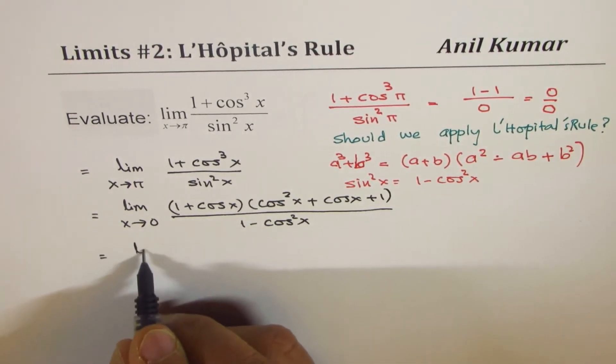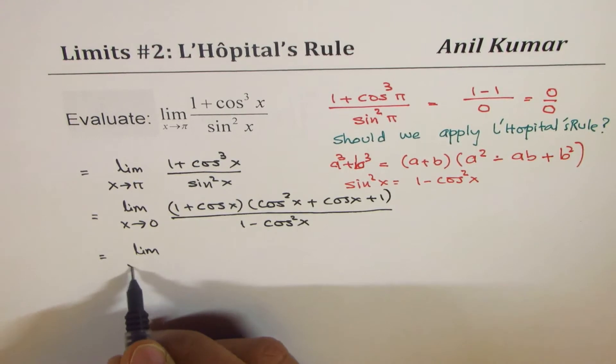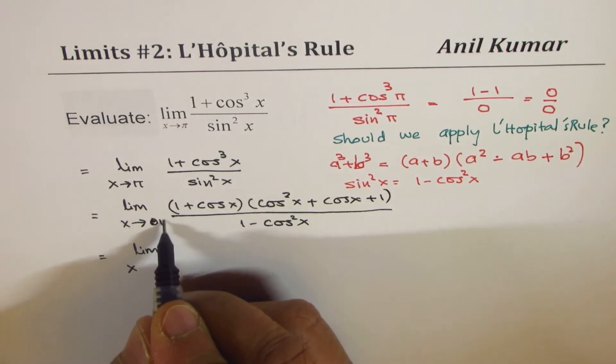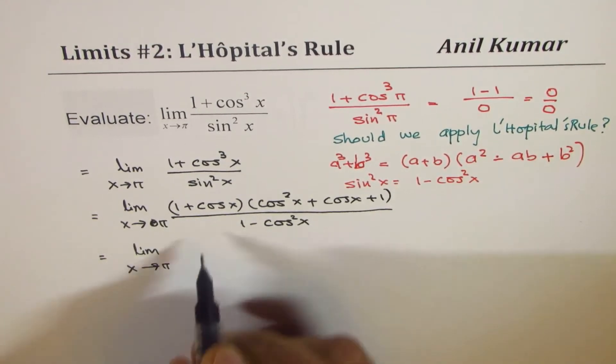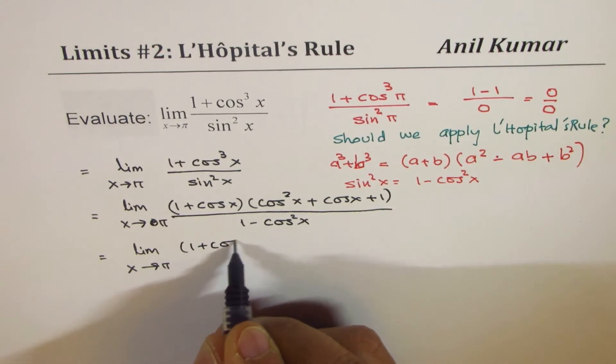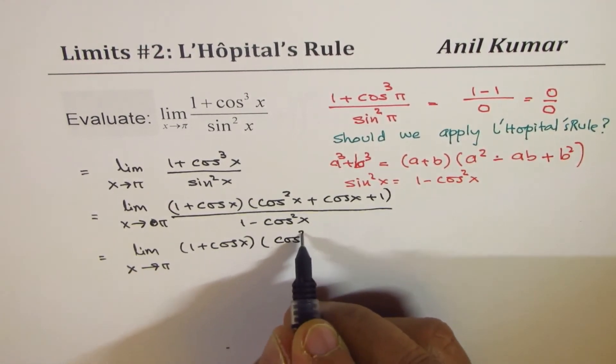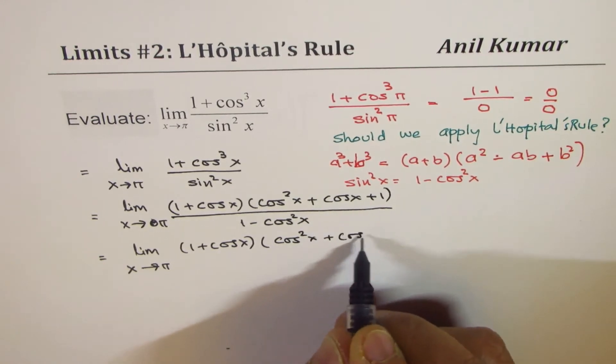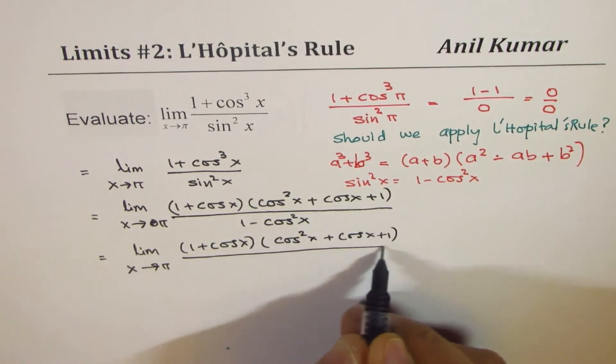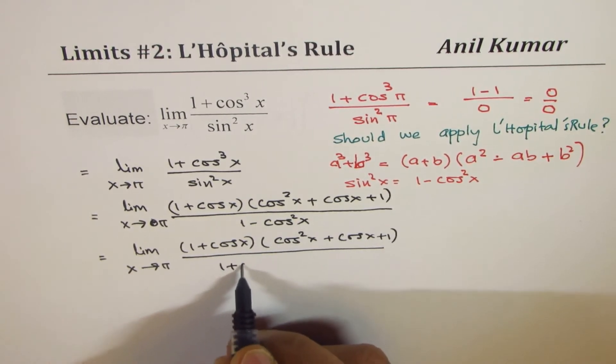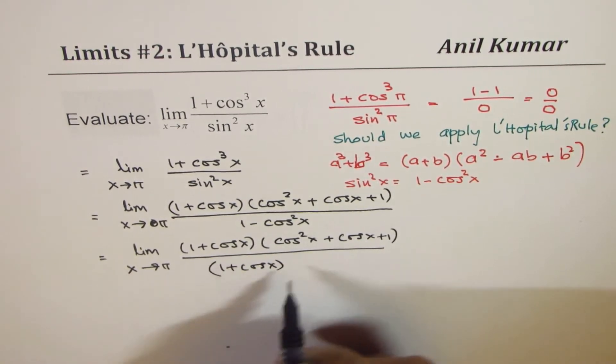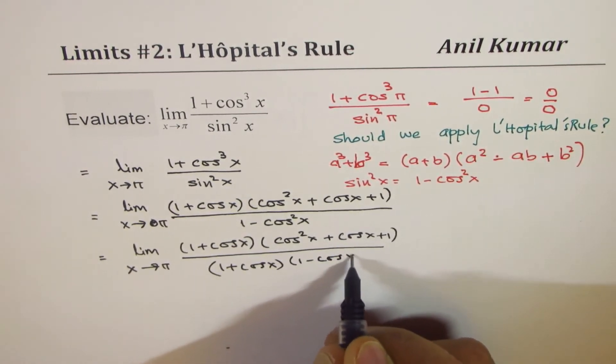And now we can factor the denominator. Sorry, this is π, x approaches π. So we have (1 + cos x)(cos²x + cos x + 1) over (1 + cos x)(1 - cos x), correct?